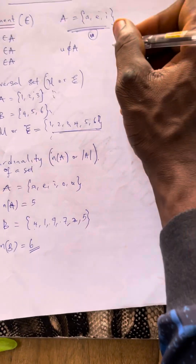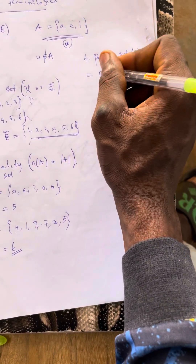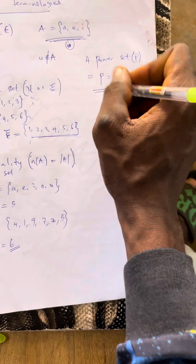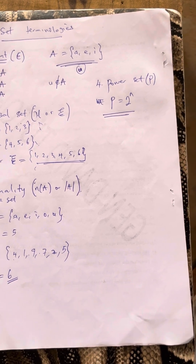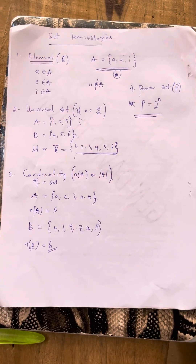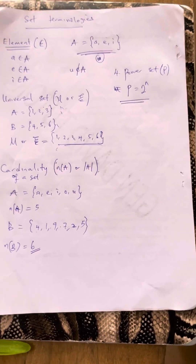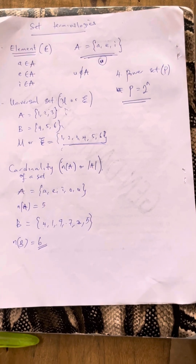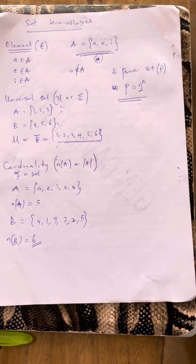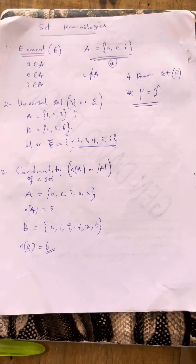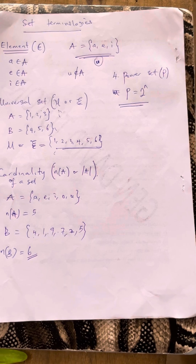The next one is the power set, denoted as P. The basic formula for power set is 2 raised to the power N. If you are asked to find the power set of a particular set, it equals 2 raised to power N. For a full explanation of the power set, please check our YouTube channel Gendevit Calculator where I explain the power set in detail.